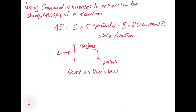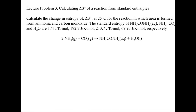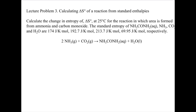Let's look at a problem using this standard entropy change to do some chemistry. Lecture problem 3 says: calculate delta S of a reaction from standard entropies. Calculate the change in entropy, delta S, at 25 degrees Celsius for the reaction in which urea is formed from ammonia and carbon dioxide. The standard entropy of urea, ammonia, CO2, and H2O are 174, 192, 213.7, and 69.95 joules per kelvin per mole, respectively.